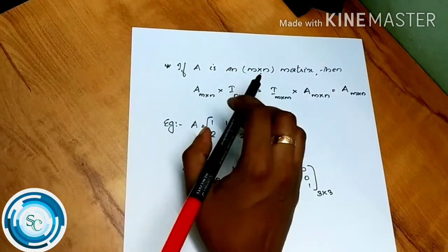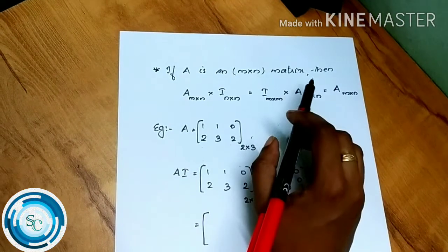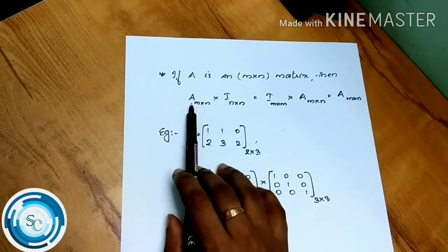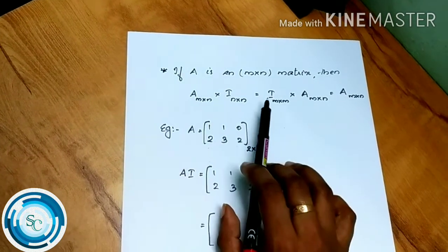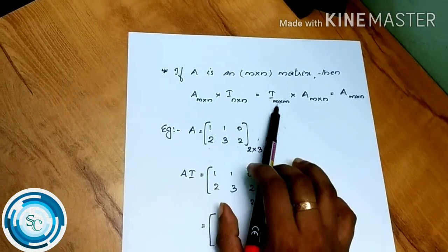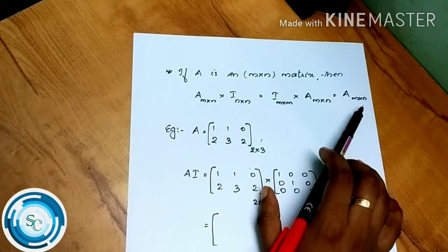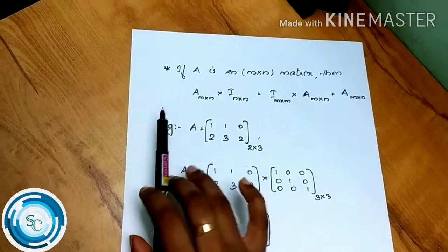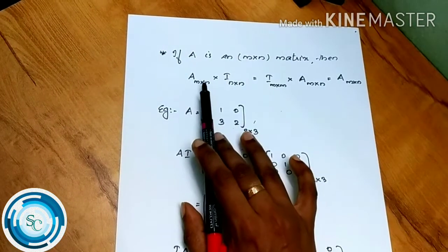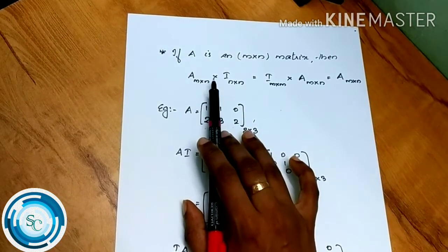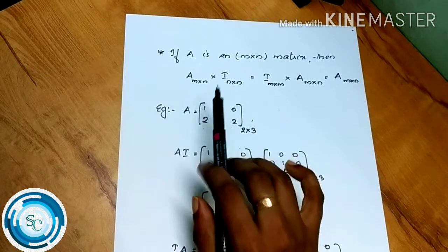If A is an m×n matrix (non-square), then A·I_n = I_m·A = A. We find that an m×n matrix times I_(n×n) equals I_(m×m) times the m×n matrix, which still equals the original m×n matrix.